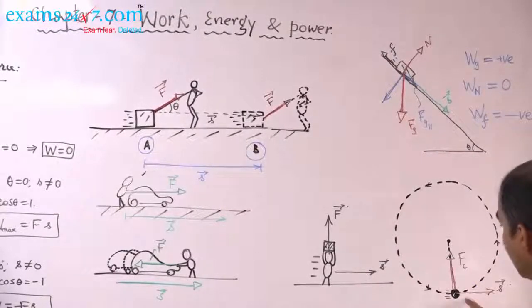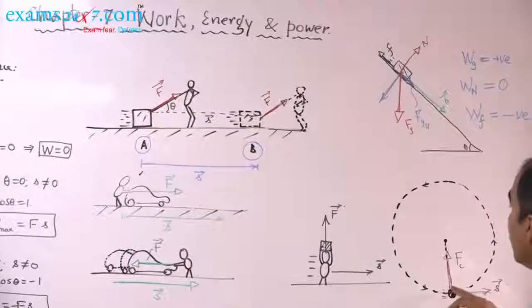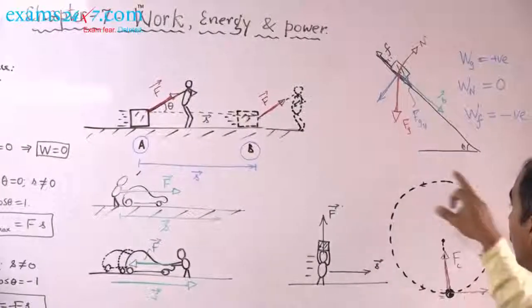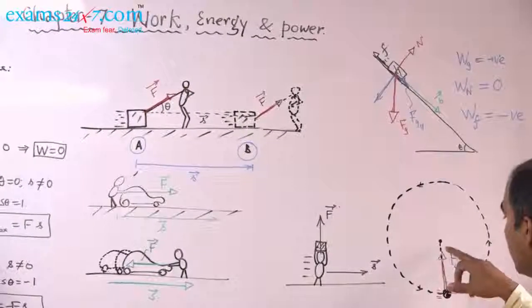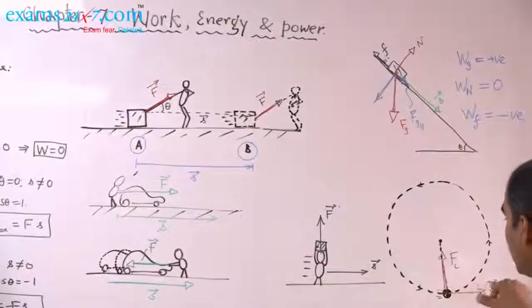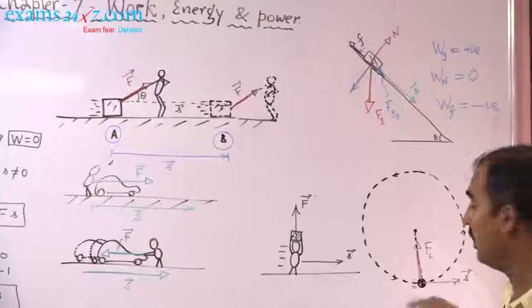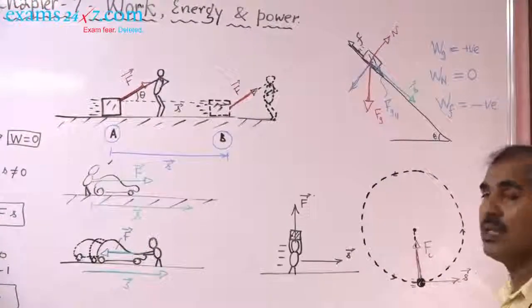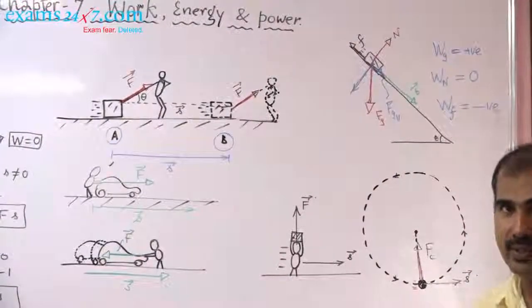In circular motion, when a particle moves in a circular path, the centripetal force is always perpendicular to the displacement, so work done by the centripetal force is always zero.